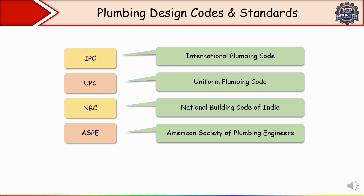The important ASPE standards are: the ASPE Data Book, which covers water supply, drainage and stormwater systems; ASPE 45, which provides guidelines for siphonic roof drainage; and ASPE 75, which covers hot water temperature limits to prevent scalding.